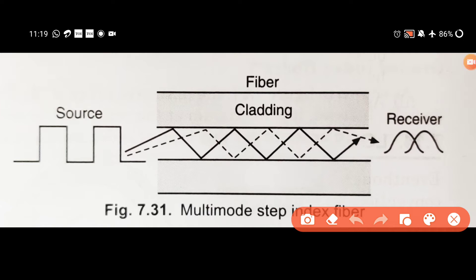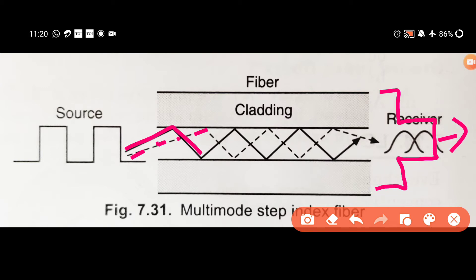In multi-mode, more than one signal can be transmitted. Multiple signals travel through the fiber. Looking at the conditions, the cladding refractive index is on the outside, and the core refractive index is in the middle. The core refractive index must be greater than the cladding refractive index.